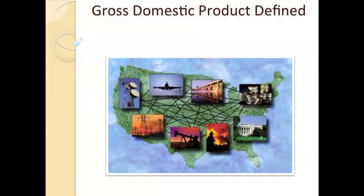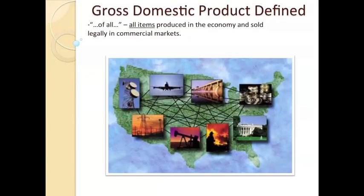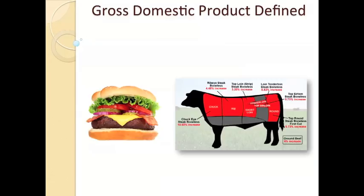The second part of the definition: 'of all.' All items produced in the economy and sold in legal markets are accounted towards gross domestic product. Anything that is sold legally on commercial markets is part of GDP — the total market value, the price, the cost of everything that's sold legally.